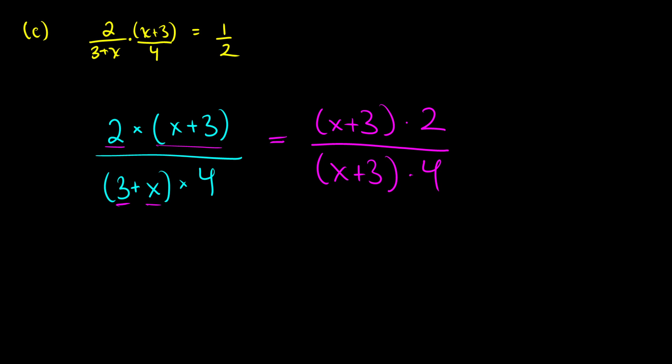Just by reordering things using commutativity on the top and the bottom, on the top for multiplication, on the bottom for addition, we see two similar terms. We see (x + 3) on the top, we see (x + 3) on the bottom. This is the same thing, essentially, as multiplying everything by 1. So (x + 3) divided by (x + 3) is just the same thing. So essentially we're multiplying by 1, and that leaves us with 2 over 4, since we can just cancel out similar terms.